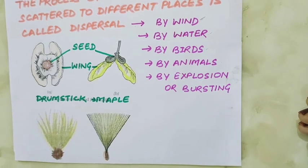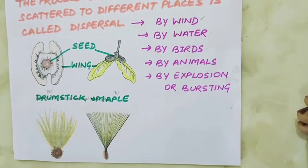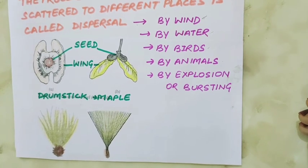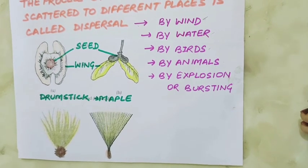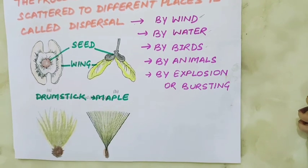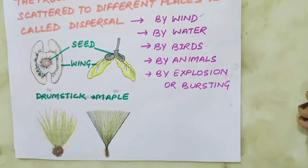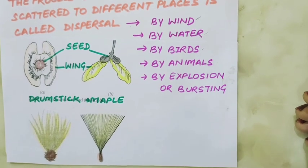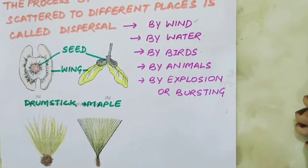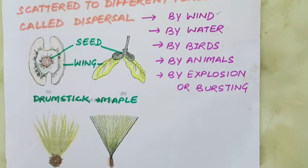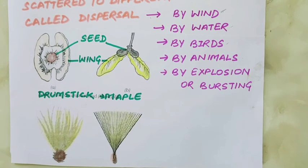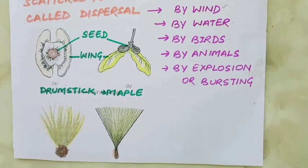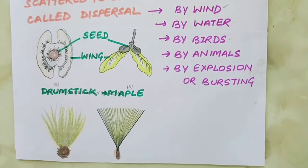What are the benefits of seed dispersal? Seed dispersal avoids overcrowding of young plants around their parent plant. It helps in preventing competition between plants and their own seedlings for sunlight, water, and minerals. Seed dispersal also enables plants to grow into new habitats for wider distribution, providing them with a better chance of survival.